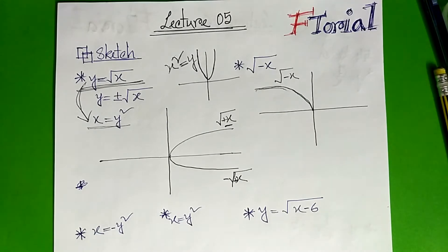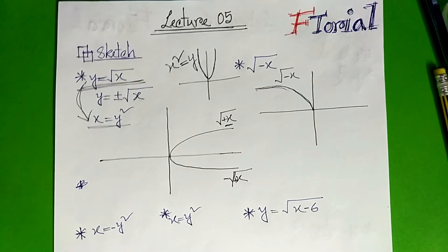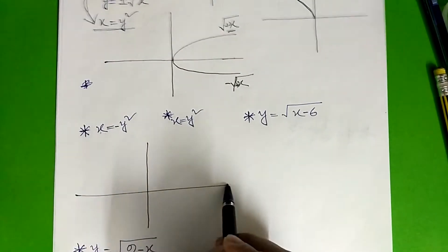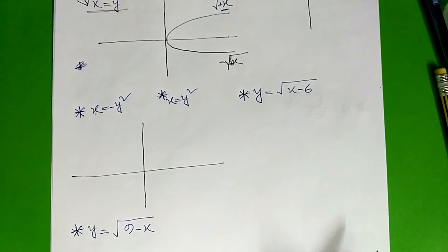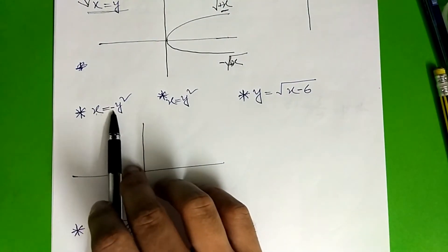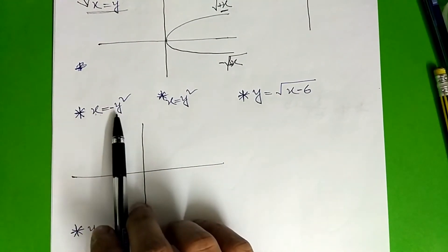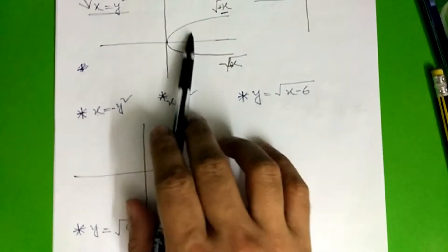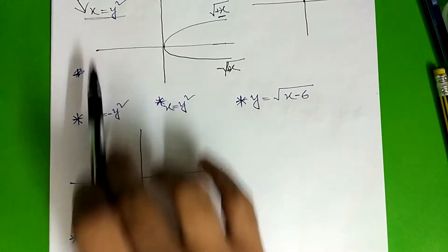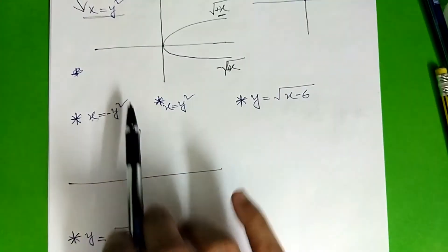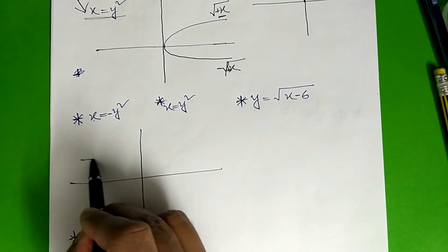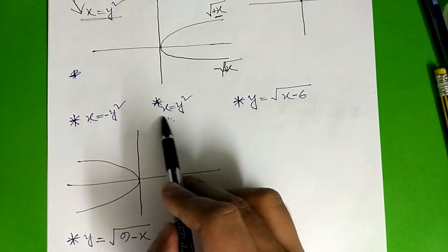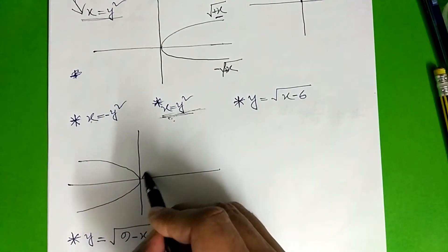I am going to show our next example. X squared is equal to minus y squared. Y squared is negative. It is just opposite.